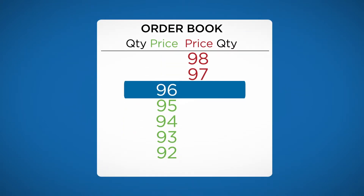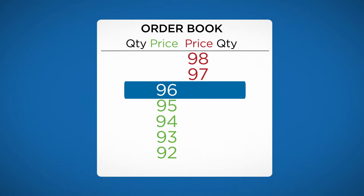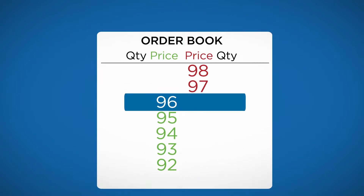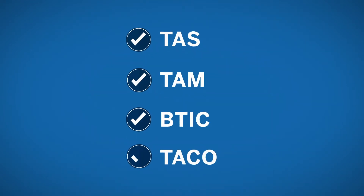Market participants are familiar with trading through the Central Limit Order Book, which shows market prices at various levels. However, there are some trades that can be executed on Globex at a yet-to-be-determined price. Let's quickly review each one.